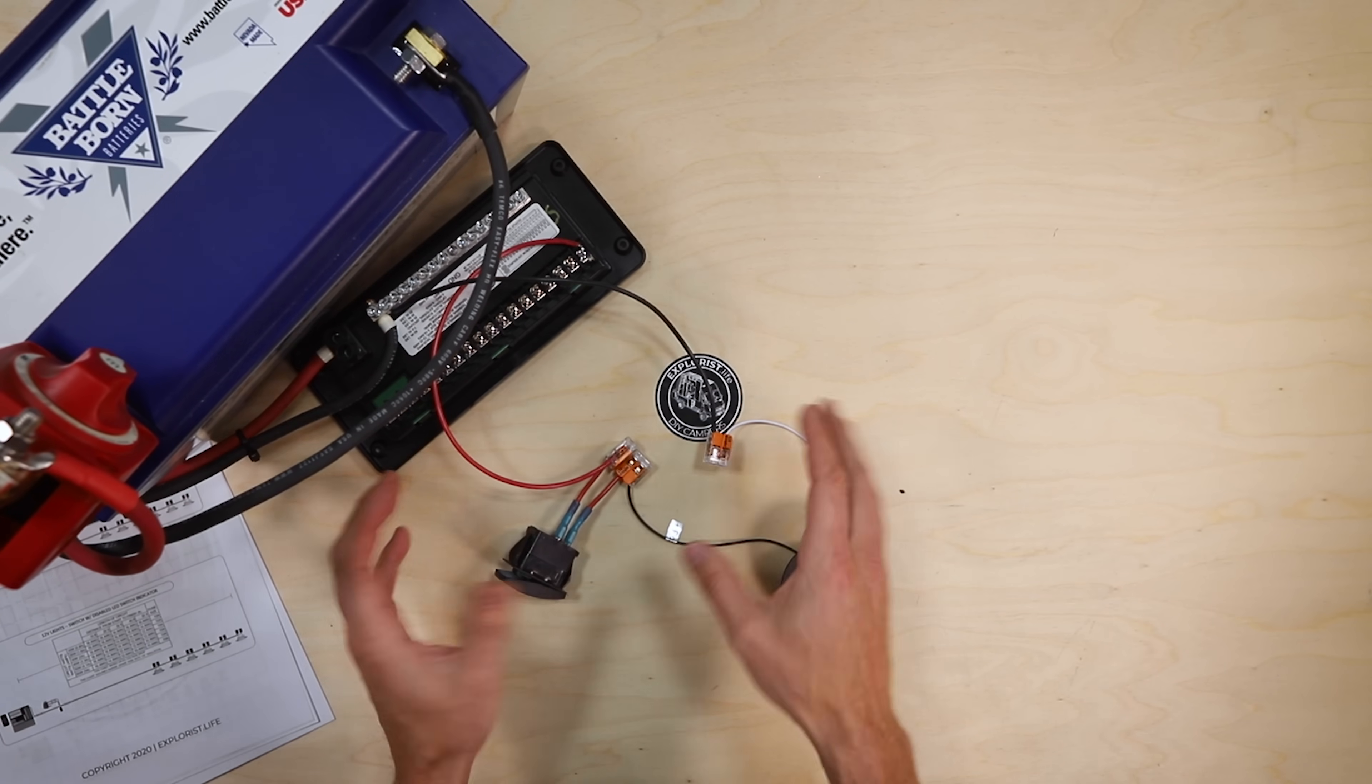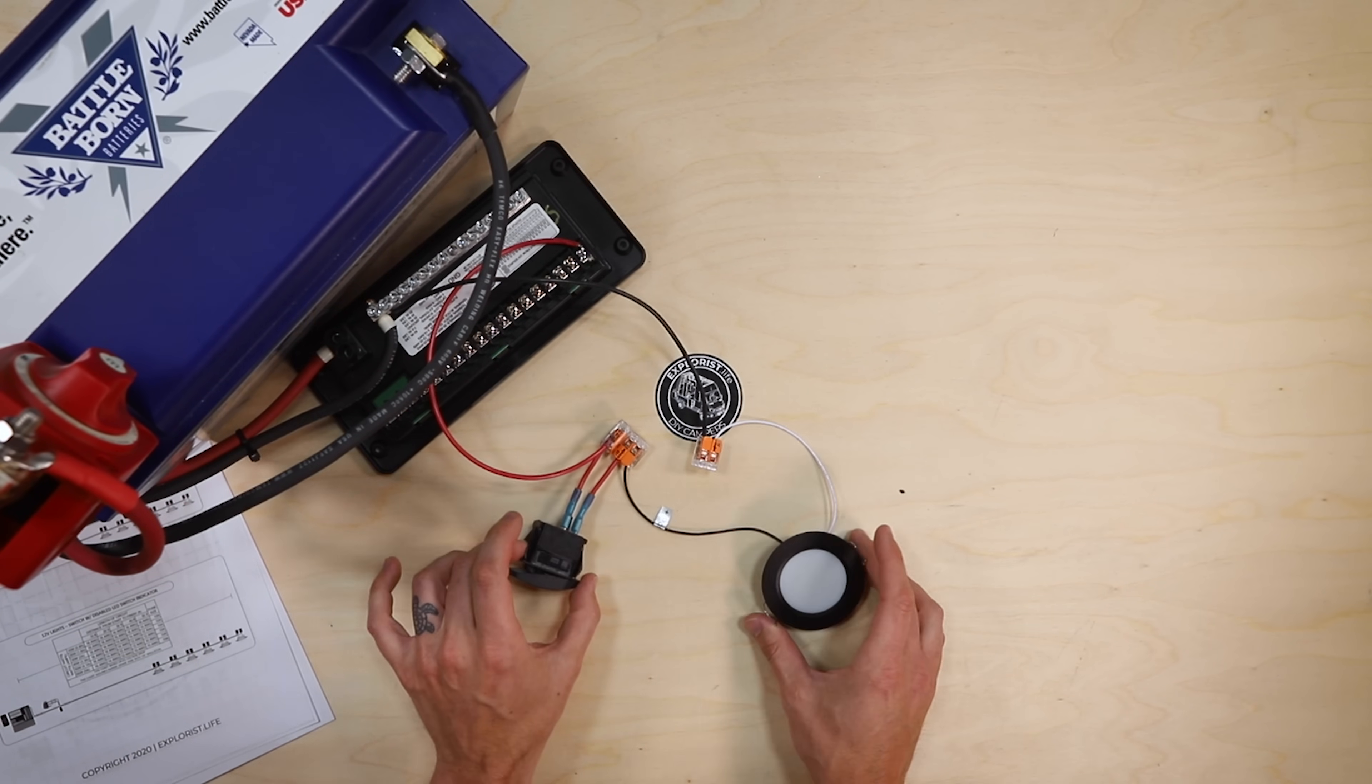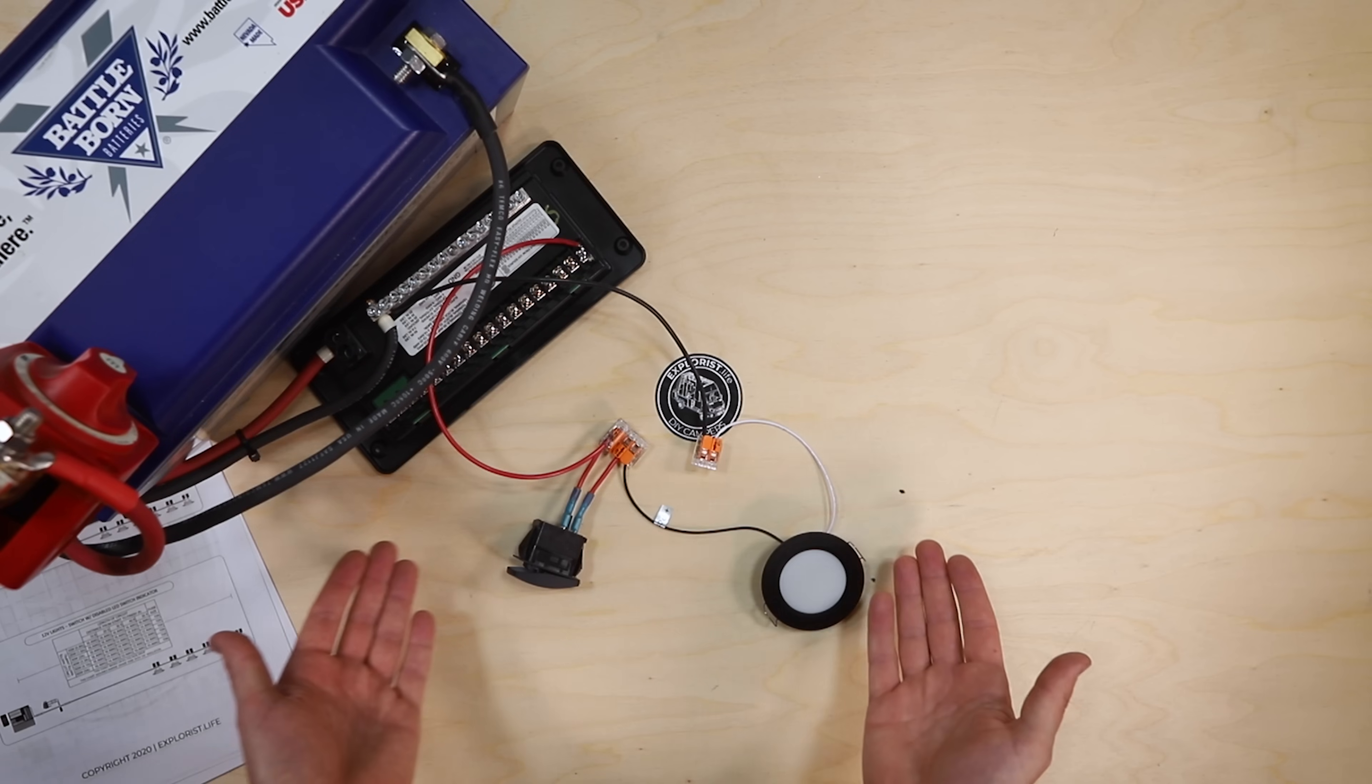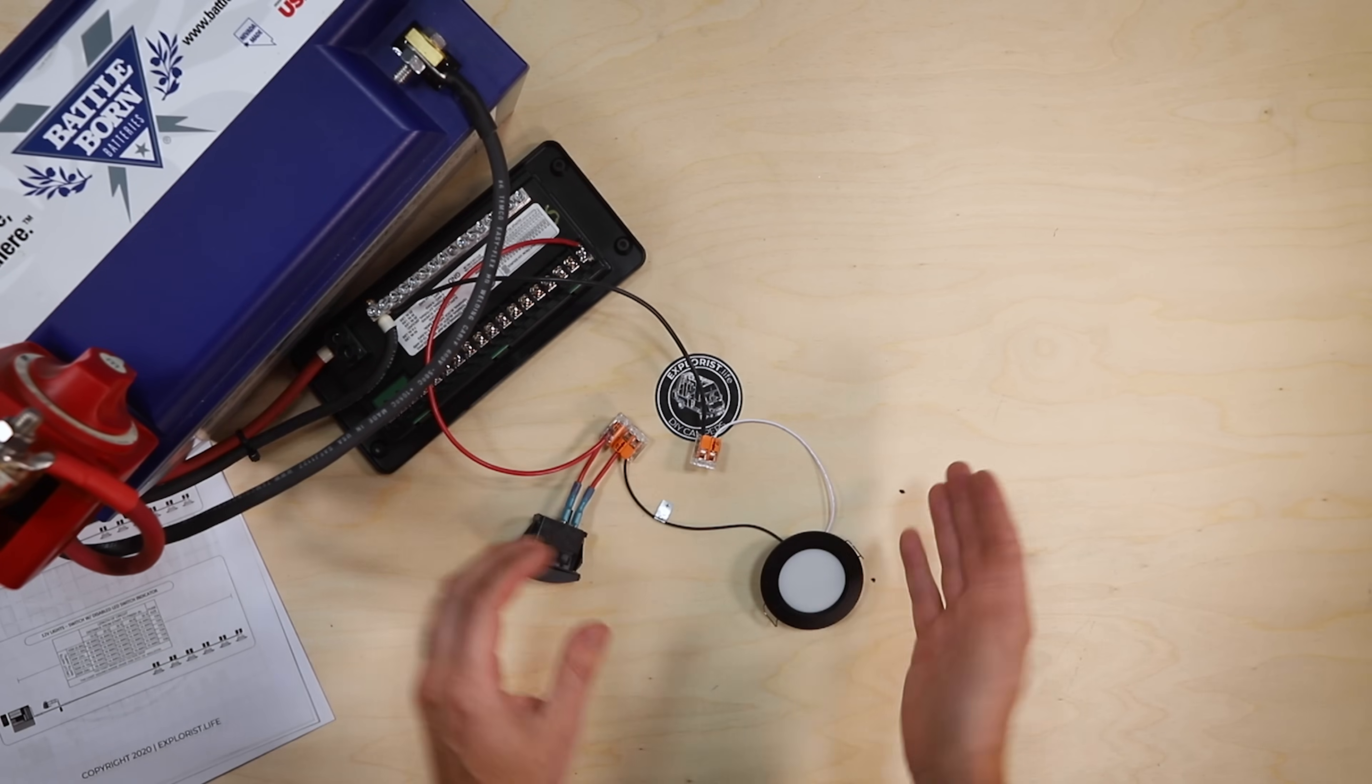The chances of us having a single light on a switch in our camper is a possibility, but usually there's more than one light. So I'm going to show you how to do that now.